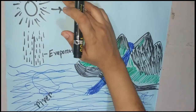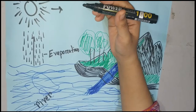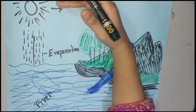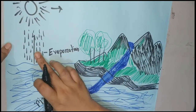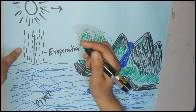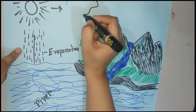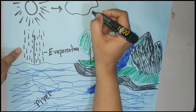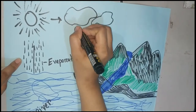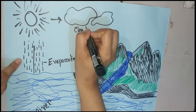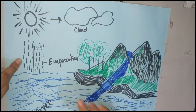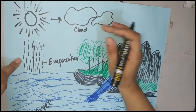When this water vapor rises up in the air, it meets cool air and becomes cool, forming tiny drops of water in the upper air. This water vapor forms tiny drops of water, and they join together and make clouds. We all can see clouds in the sky. The changes of water vapor into tiny drops of water is called condensation.